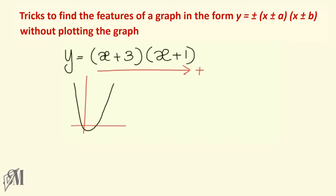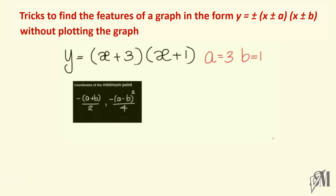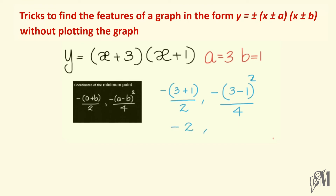To find out the rest of the features, we should clearly identify the values of a and b. In this case, a equals 3 and b equals 1. To find the coordinates of the minimum point, we substitute the values: the x-coordinate is minus (a plus b) divided by 2, which is minus (3 plus 1) divided by 2 equals minus 2. The y-coordinate is minus (a minus b) squared divided by 4, which is minus (3 minus 1) squared divided by 4 equals minus 1. So (minus 2, minus 1) are the coordinates of the minimum point.